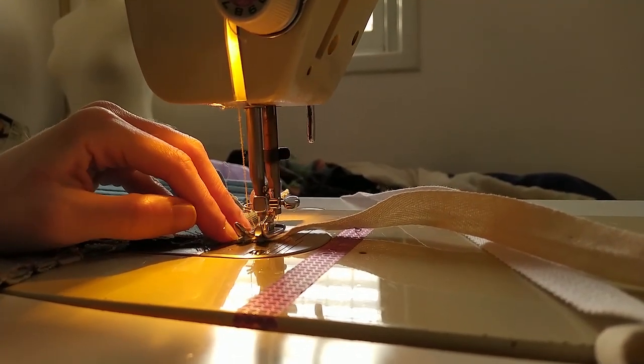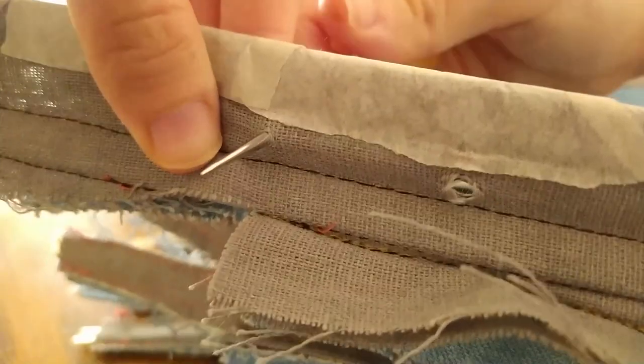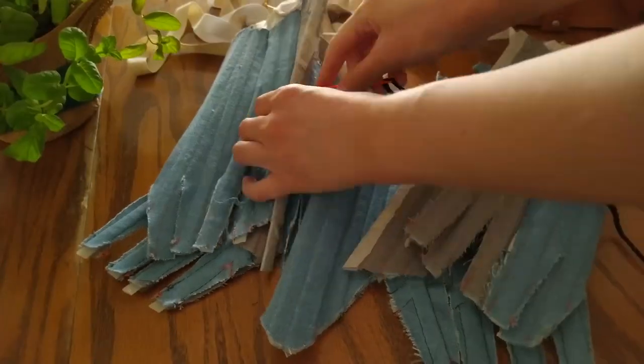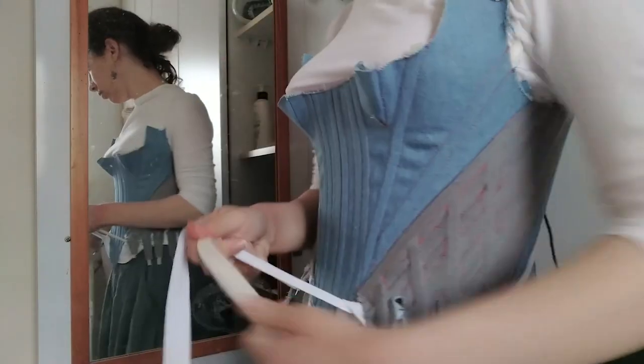Ooh, look at that! I found my awl! Now I can poke holes where I marked the eyelets. I don't need to bind them because this is just a mockup. Then I spiral lace with whatever this cord is that I had hanging around. In one side and out the other. And try it on! Yay!